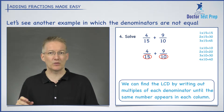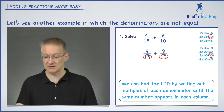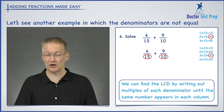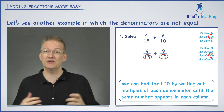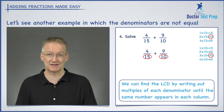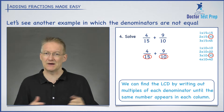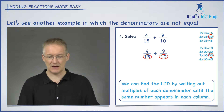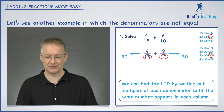I stop when I find the same number appearing. In this case, I've got 2 times 15 is 30, and I've got 3 times 10 is 30. So, 30 is my lowest common denominator. This is a nice method for finding your LCD. So now I'm going to rewrite each of these as something over 30.